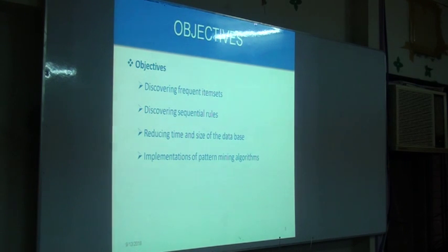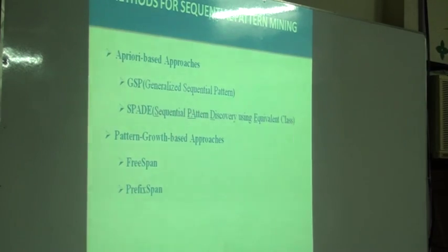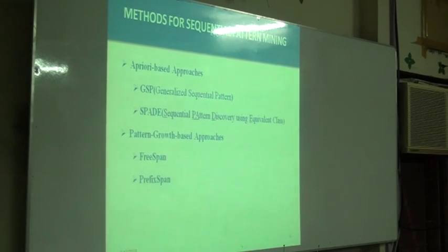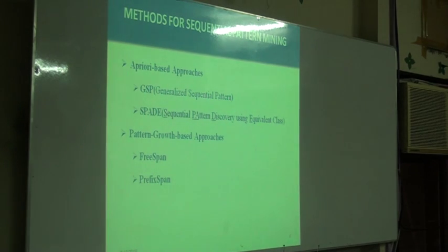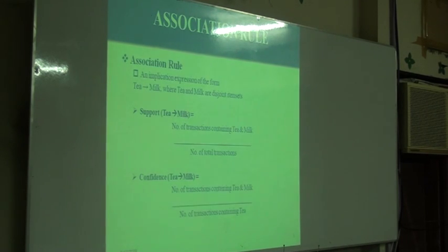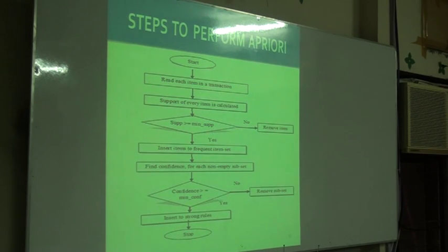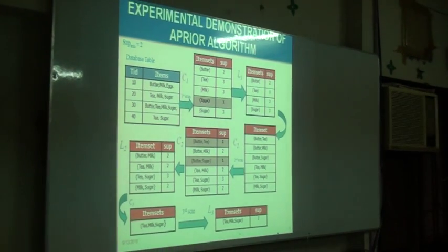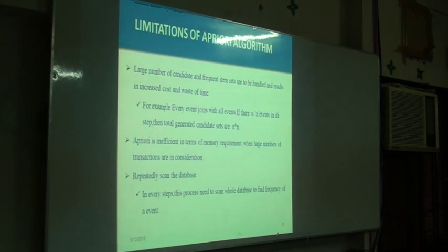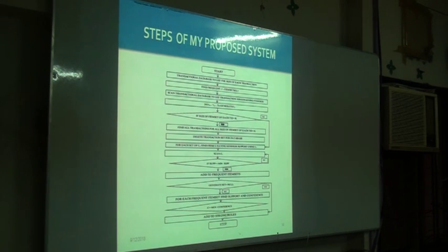The main objective of my thesis is describing frequent item sets and discovering sequential rules while reducing the time and size of the database. Different types of pattern discovery approaches have been proposed for sequential pattern mining: apriori-based approaches and pattern-growth-based approaches. I work on apriori-based approaches. I also used association rules, which find the correlation between items frequently occurring in the sequence database, using two parameters: support and confidence.